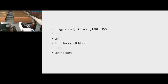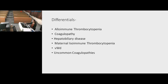Imaging studies include MRI, USG, CBC, LFT, stool for occult blood, and liver biopsy. Differentials include alloimmune thrombocytopenia (which is chronic, presenting after 72 hours), coagulopathy, hepatobiliary disease, maternal isoimmune thrombocytopenia, and uncommon coagulopathy.